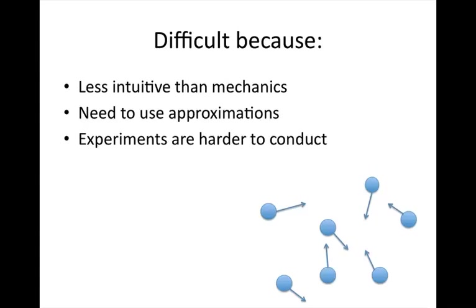Thermal Physics is a bit more difficult than Mechanics because it's less intuitive. We can't go back to fundamental principles as much. Where possible, we will, but some of that is beyond the scope of this course. If you go on and do third year Statistical Mechanics, you'll be seeing where some of these equations come from. So for Thermal Physics, we need to use approximations. It also means that often for Thermal Physics, experiments are harder to conduct. So unfortunately, there'll be a few less demonstrations than there are for Mechanics.